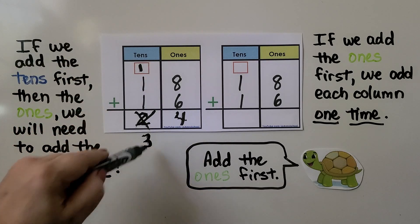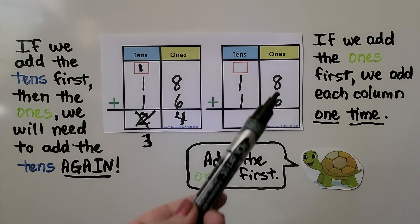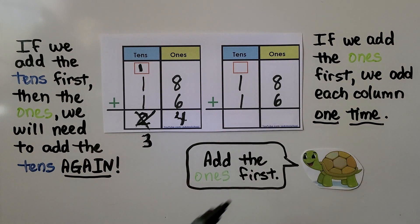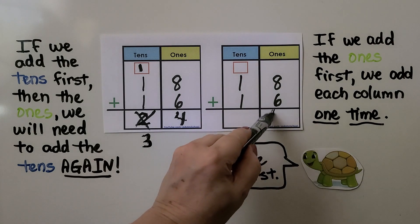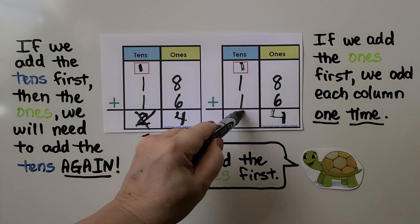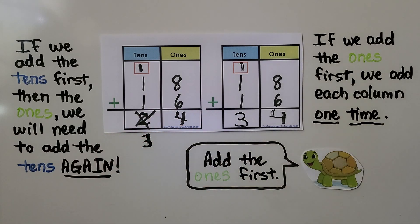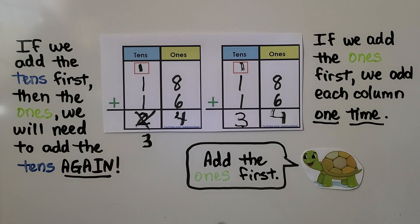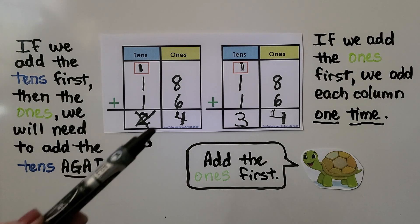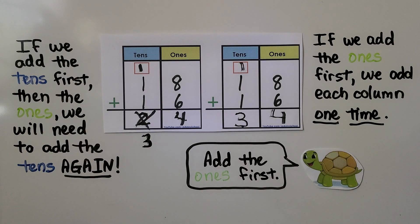So we would have to put the ten up here and the four here, and then add the tens again — changing the two to a three. If we add the ones first, we get fourteen ones. We put a four in the ones place, regroup the ten, then put three tens. That way we only add each column one time. So add the ones first.